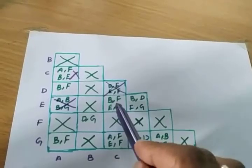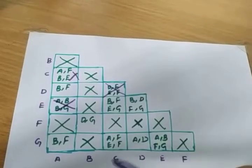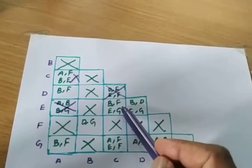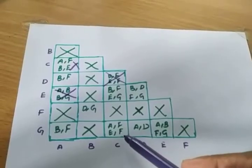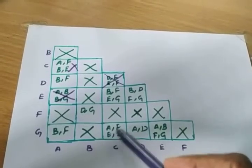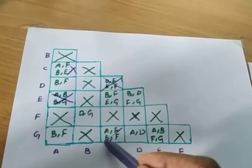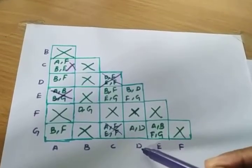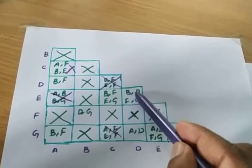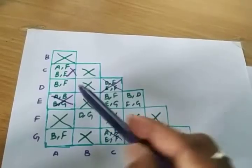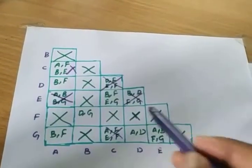The CE column has entries BF and EG. BF has no problem. EG — E and G have no cross mark, and BF has no cross mark, so this is taken. This column is already crossed. For the CG column, entry AF is crossed, so we need to cross CG as well. Now the DE column has entry BD — BD is crossed, so we cross DE too.